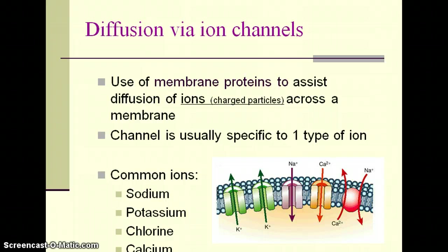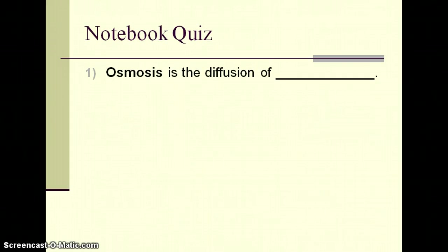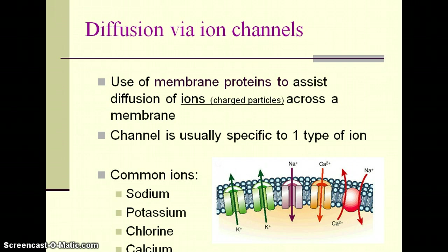Some common ions we'll talk about are sodium, potassium, chlorine, and calcium. So these are the four types of diffusion: regular diffusion, osmosis, facilitated diffusion, and diffusion through ion channels. All four are passive transport — no energy is being used.